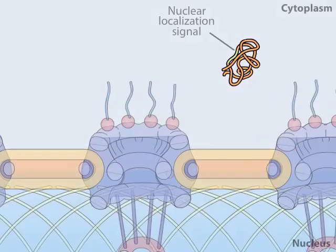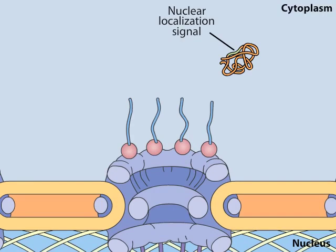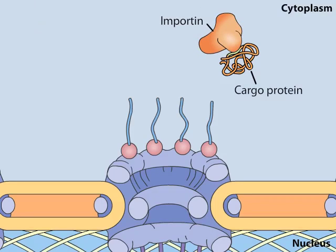Nuclear localization signals are recognized by nuclear transport receptors called importins, which carry the cargo proteins into the nucleus.